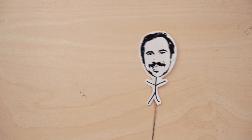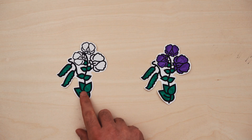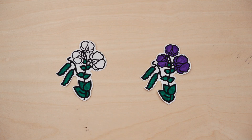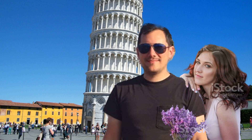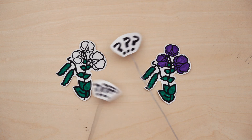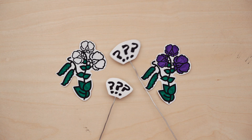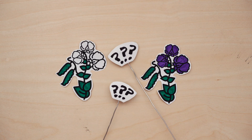I have a problem. Half of the pea plants in my garden have white flowers, and the other half have purple flowers. But my girlfriend's favorite color is lavender — not purple, lavender. So how would I go about making her a pea plant with lavender flowers?